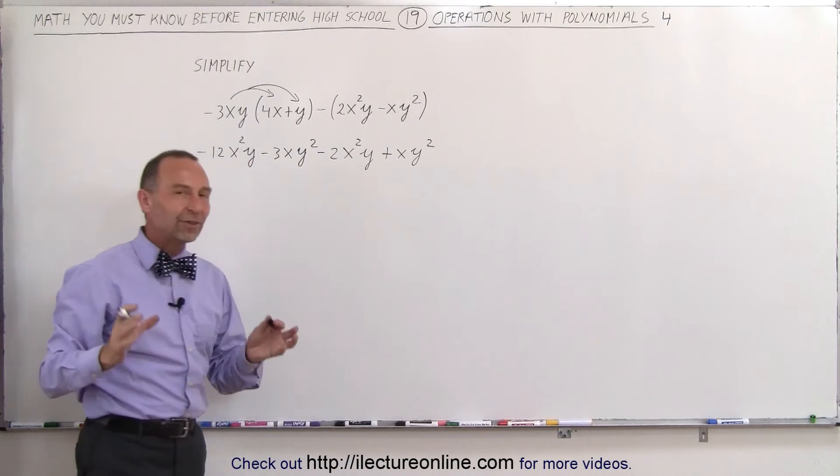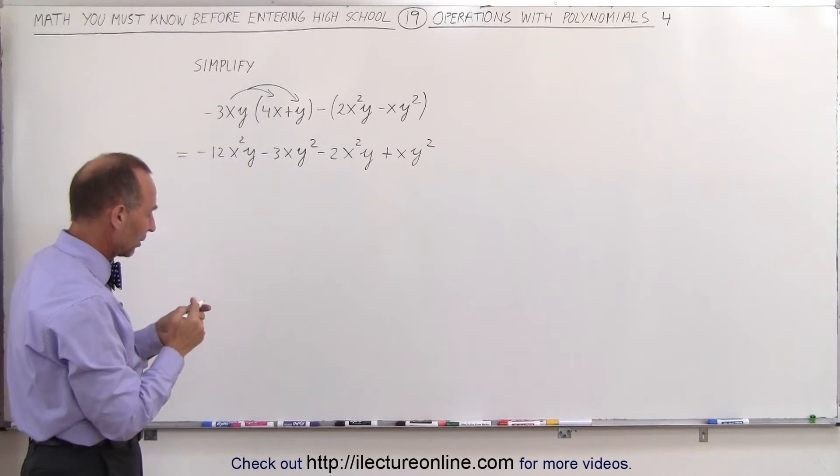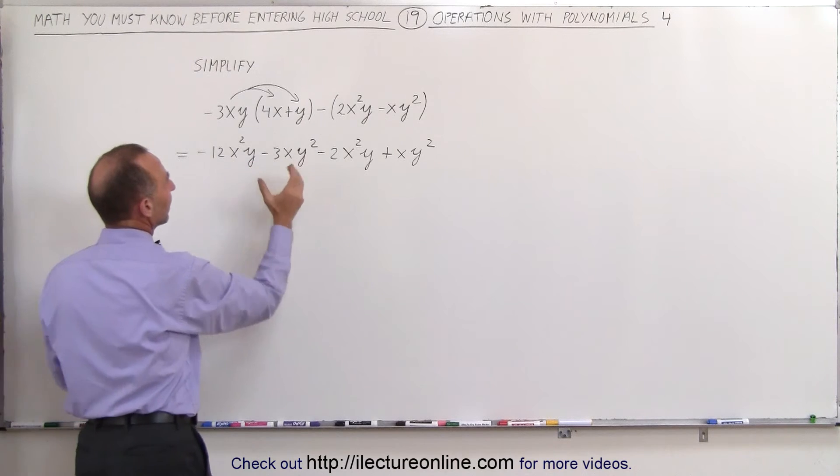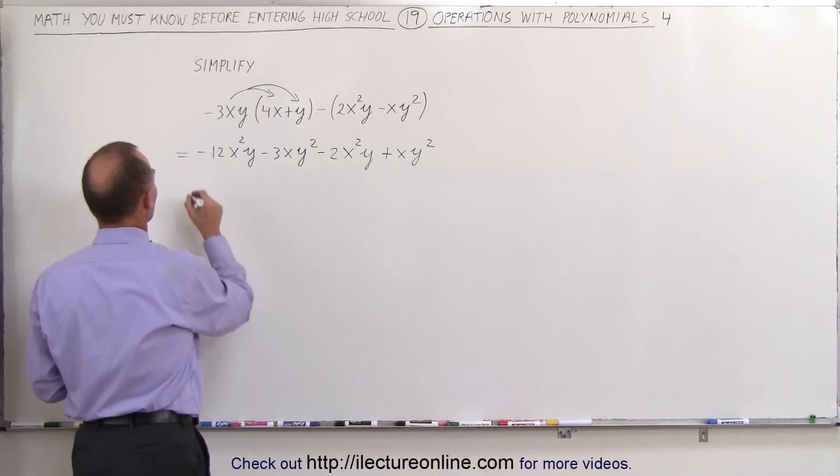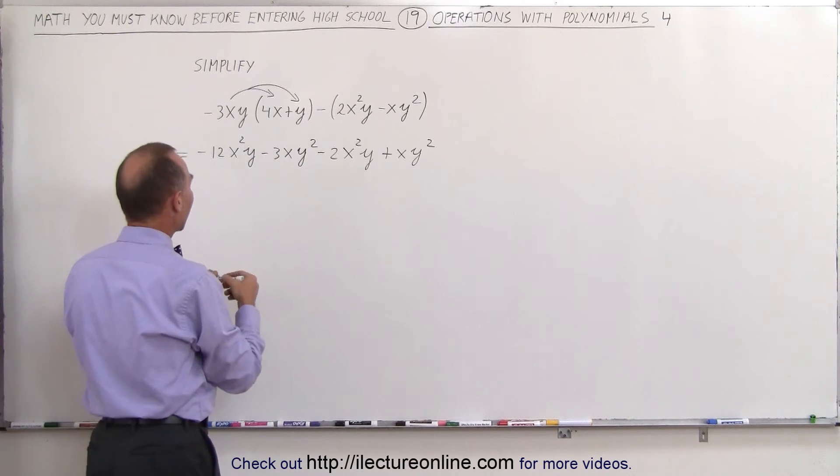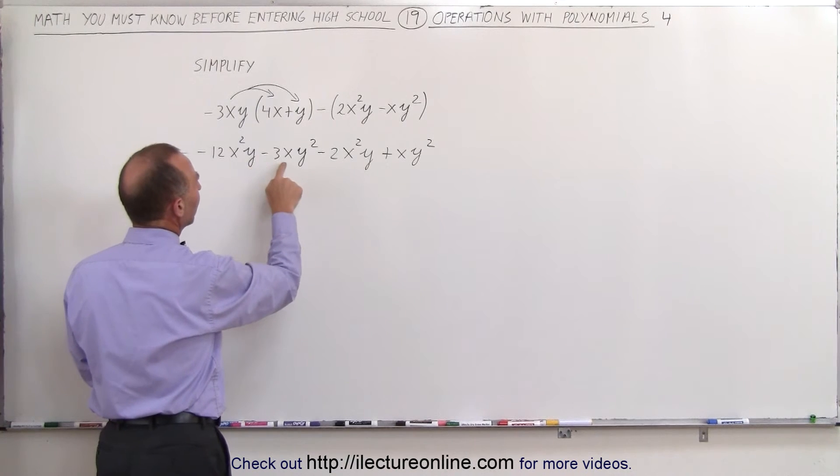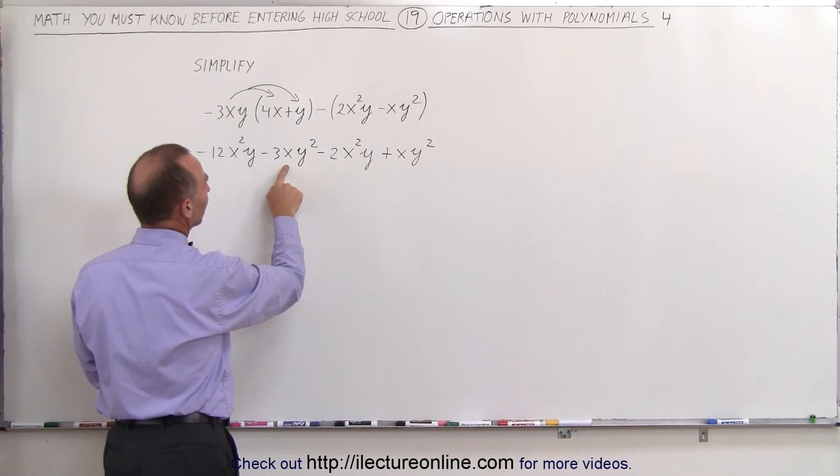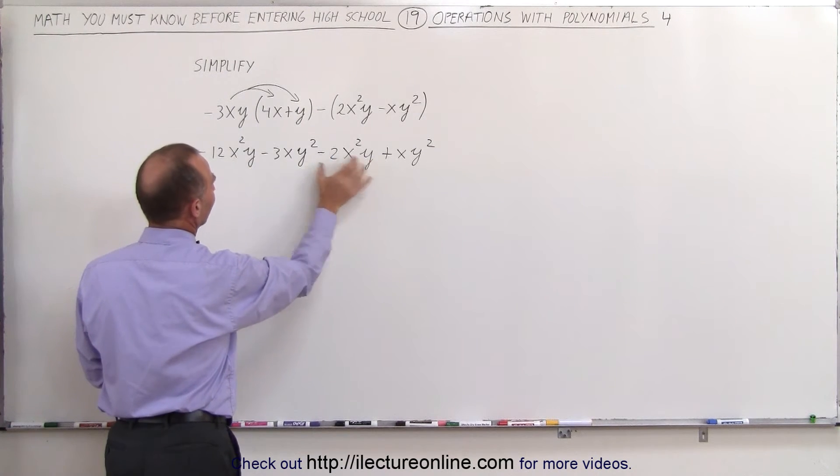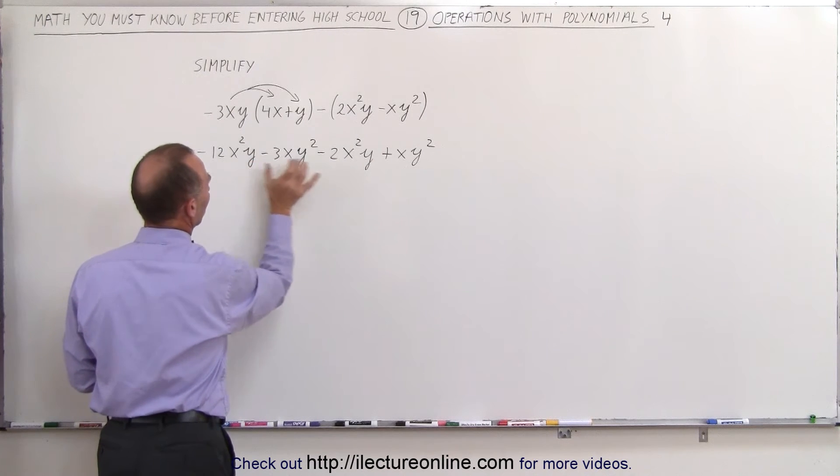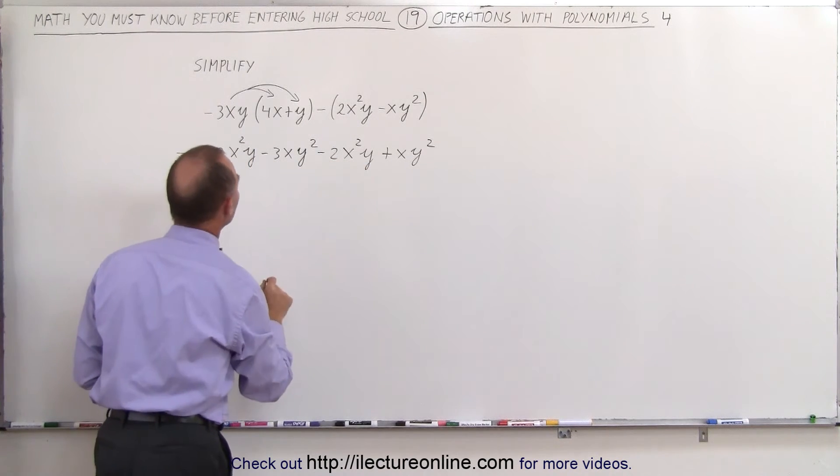Now we have to combine like terms together, which means the letter portion of each term must be identical before we can add them. So the first term here has an x squared y. Is there any other term that has an x squared y? And the answer is yes. There's another term with the exact same letter portion, x squared y. So these two terms can be combined.